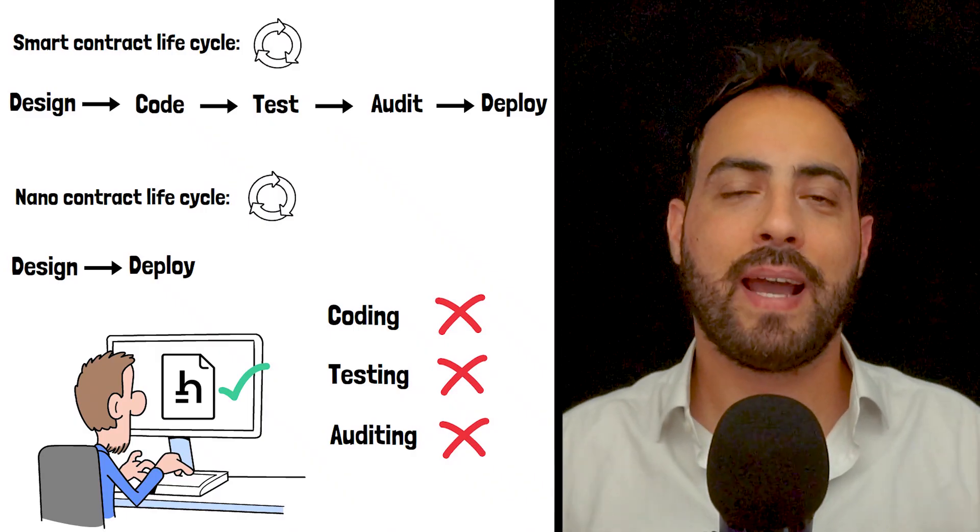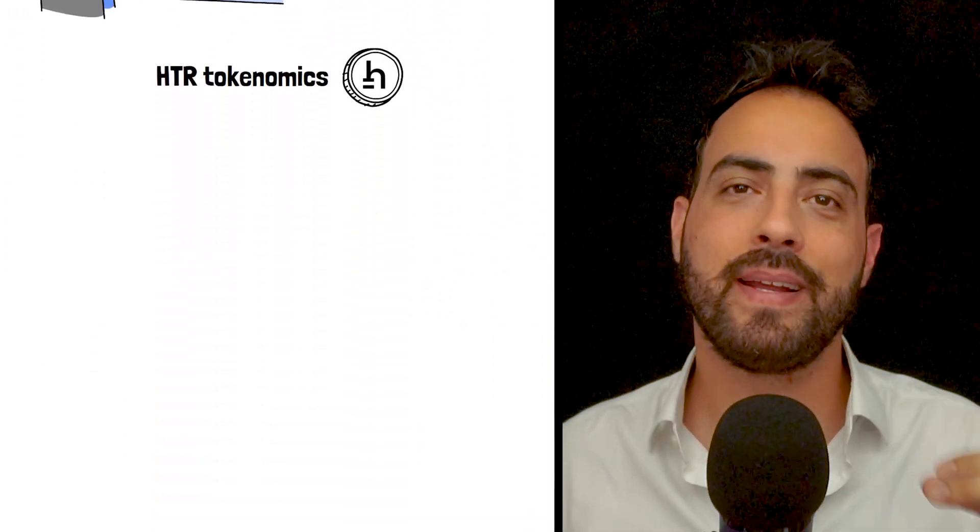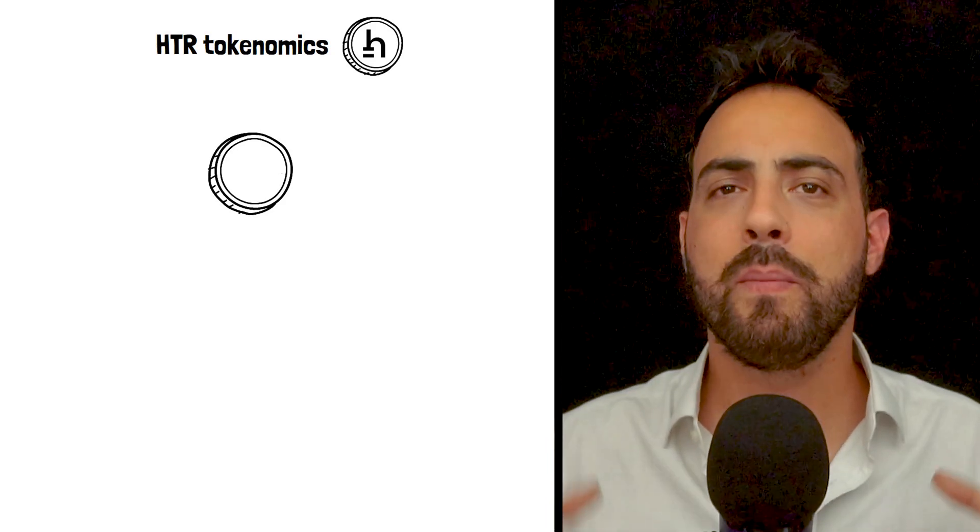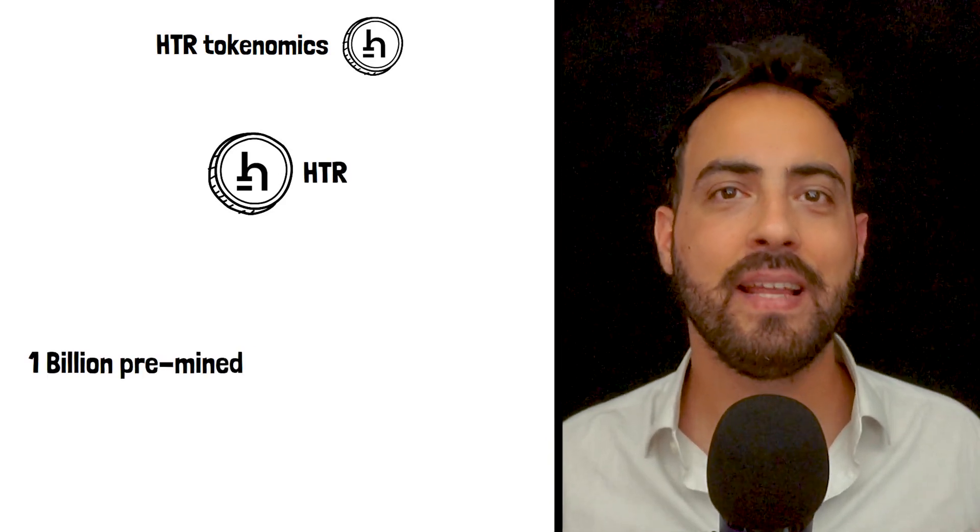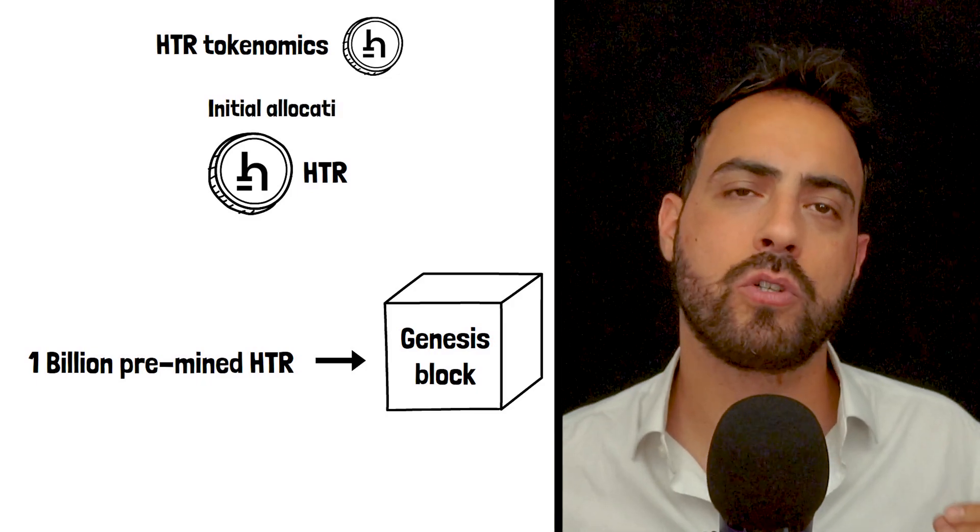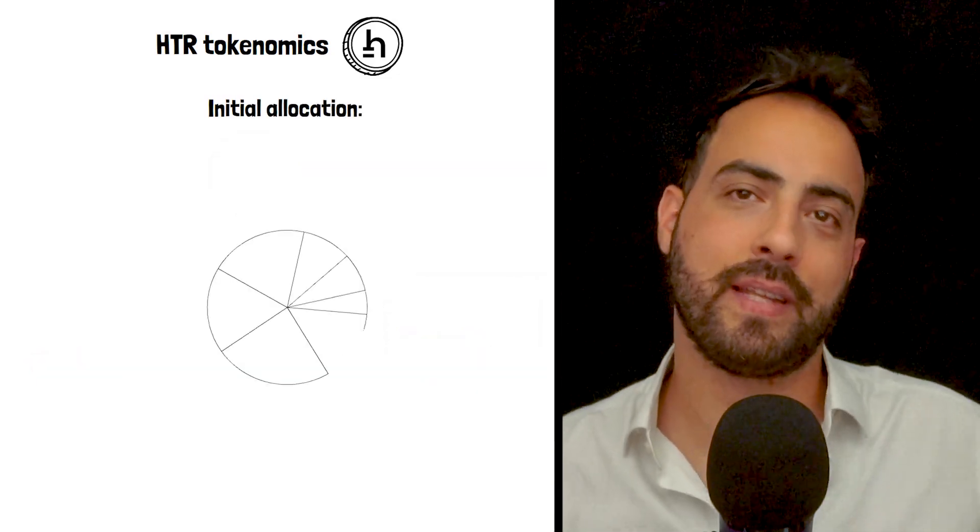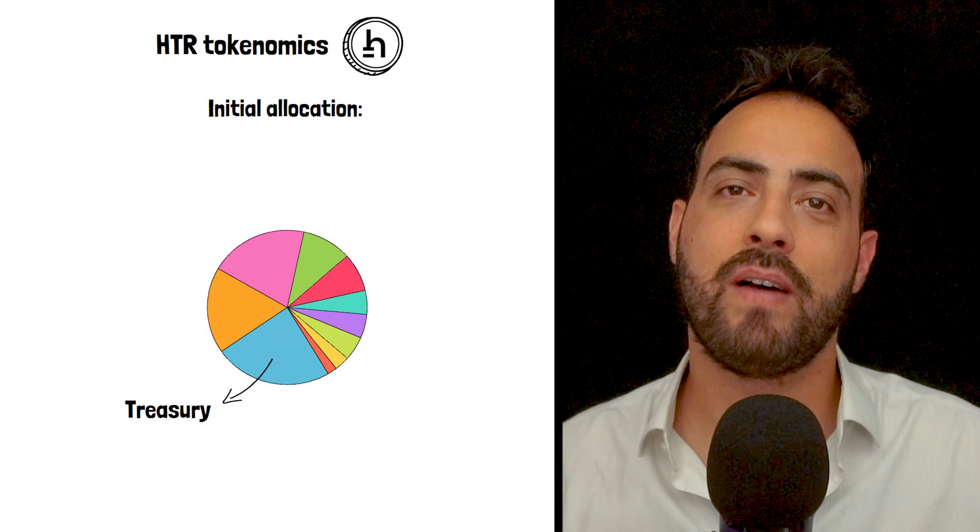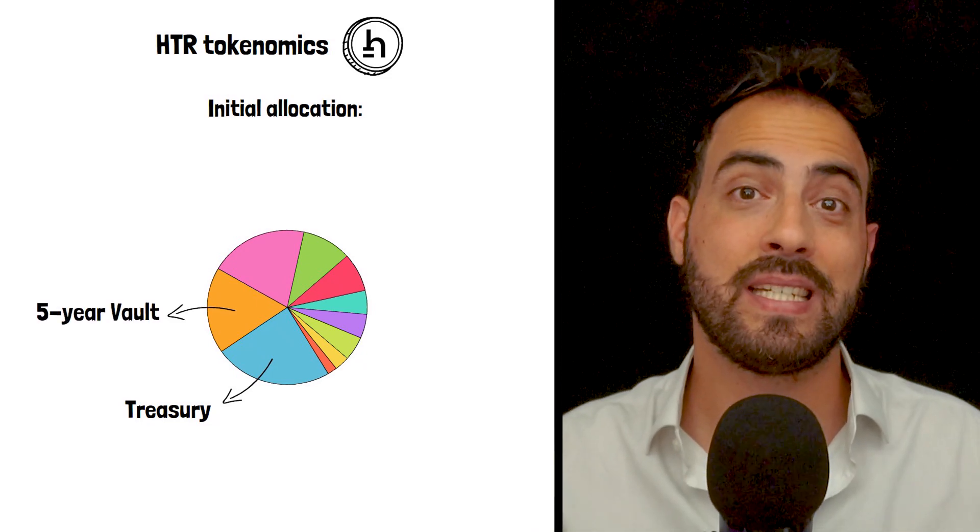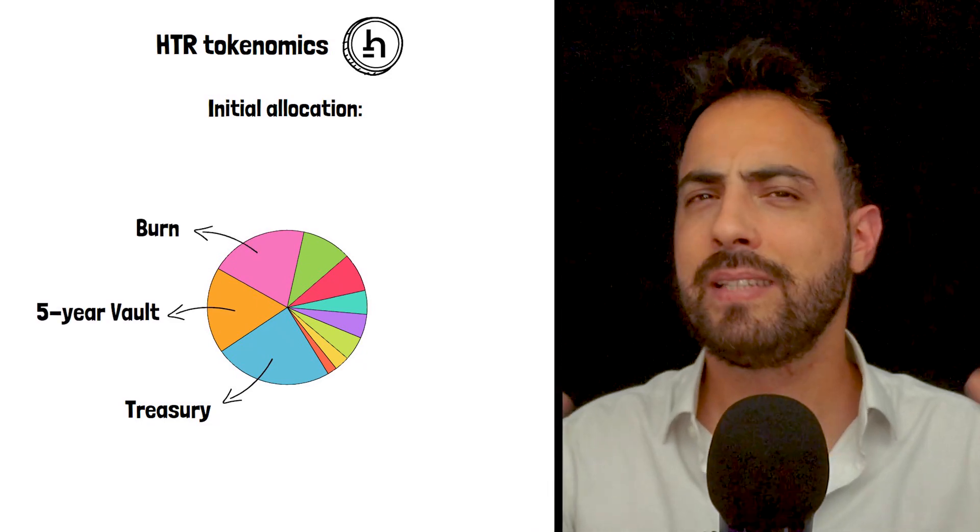Now, the native token of the Hathor network is known by the market ticker HTR. 1 billion pre-mined tokens were created at the Genesis block and allocation was as follows: 24% went to the treasury, 18% to the 5-year vault, 20% subjected to the burn schedule,